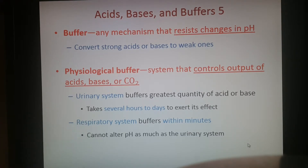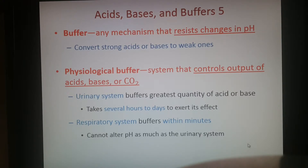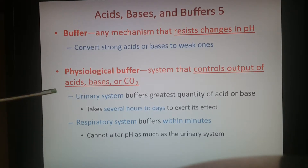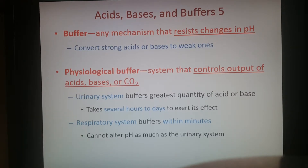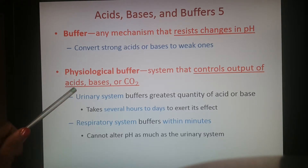There are two physiological buffer systems: one from your urinary system and one from the respiratory system. When we do the acid-base worksheet, we'll look at how changes in pH and carbon dioxide levels indicate whether the problem is with the urinary system or the respiratory system, and which one can compensate. For example, if the respiratory system can't breathe off carbon dioxide and CO2 levels are high, the urinary system can take over and help adjust the pH.